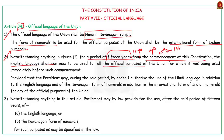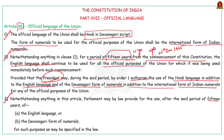Clause 3 of Article 343 gives provisions for continuation of English even after 15 years — that is after 25th January 1965. This clause empowers Parliament to make provision for the continuation of English. The next important article is Article 344, which deals with the official language commission and the committee of Parliament on official language.